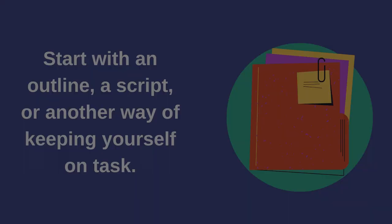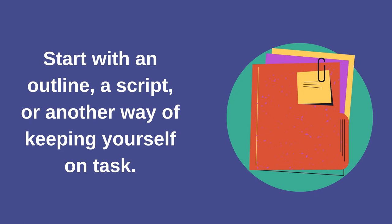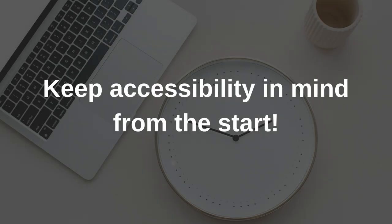Here are some general tips. First, start with an outline, a script, or another way of keeping yourself on task with your project. This can help you put together good section headings and have a solid outline that your audience can follow along with. Second, keep in mind accessibility from the start of your project. Don't wait until the end to fix all your links and check that your headings follow each other logically. If you start out with the POUR tips in mind, you'll save yourself a lot of work down the road.